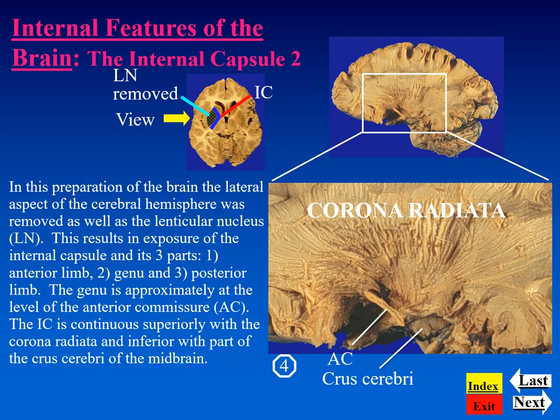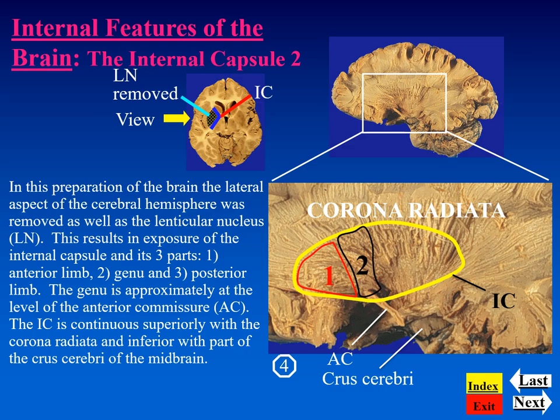Continuing with our examination of the lateral dissection of the cerebral hemisphere, we can see the corona radiata again, but now the lenticular nucleus has been dissected away and the area of the internal capsule is now exposed. The various subdivisions are now visible: anterior limb, genu — which happens to be in line with the anterior commissure labeled here — and the posterior limb. Many of the fibers of the posterior limb travel through the crus cerebri, which is labeled here and is part of the midbrain.